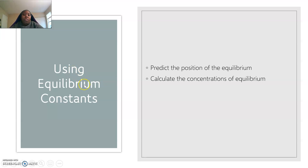When you're using equilibrium constants, you can do two things with them. You can predict the position of the equilibrium, or you can calculate the concentrations at equilibrium. In part two, we did a problem where we calculated the concentration of equilibrium. So what I want to do is focus more on the position of the equilibrium, because that's what part two was all about.